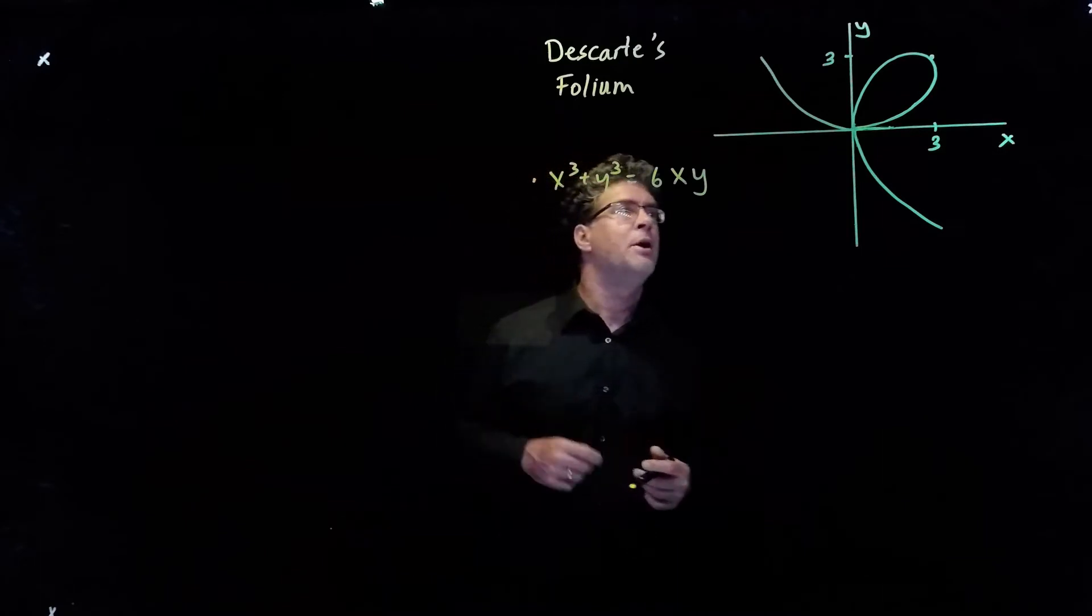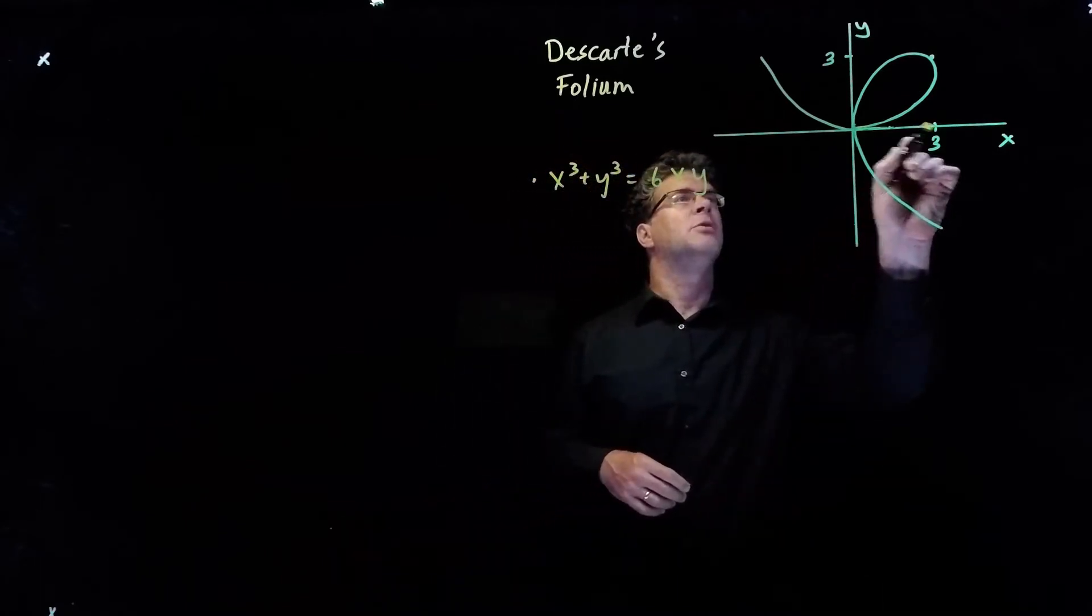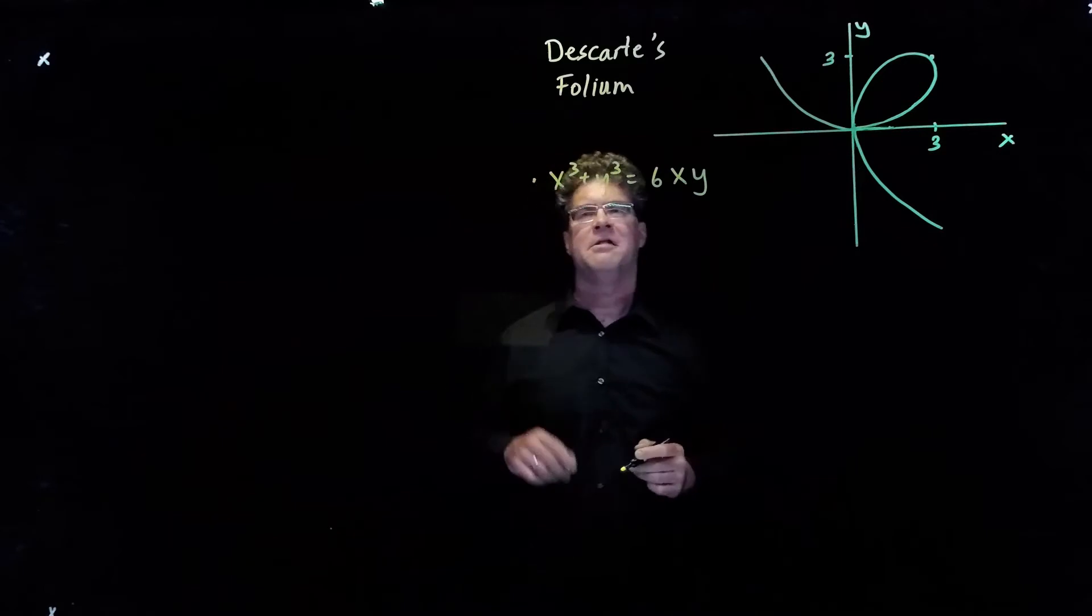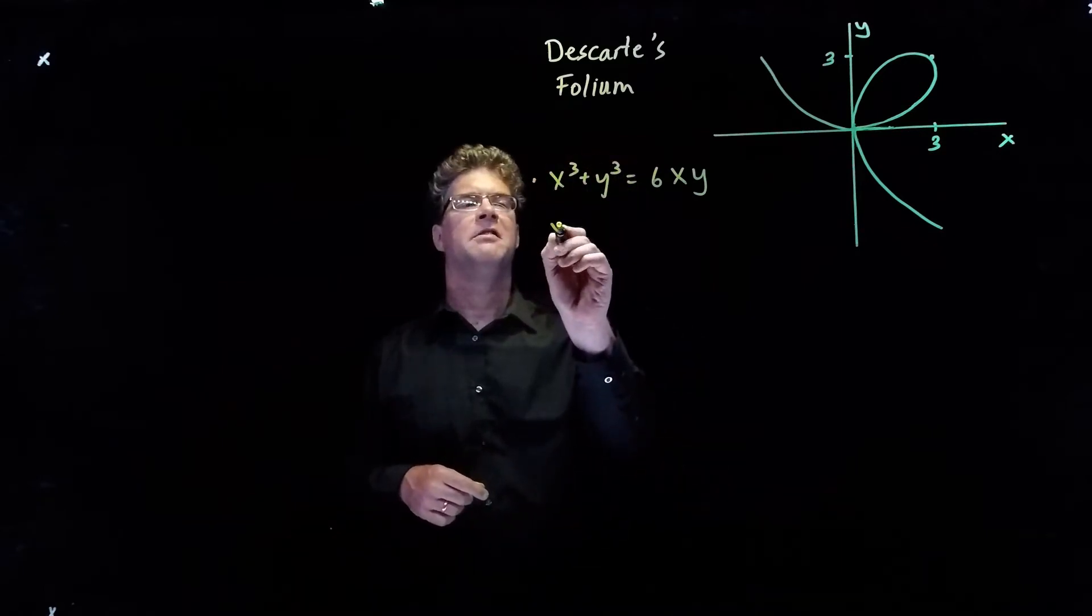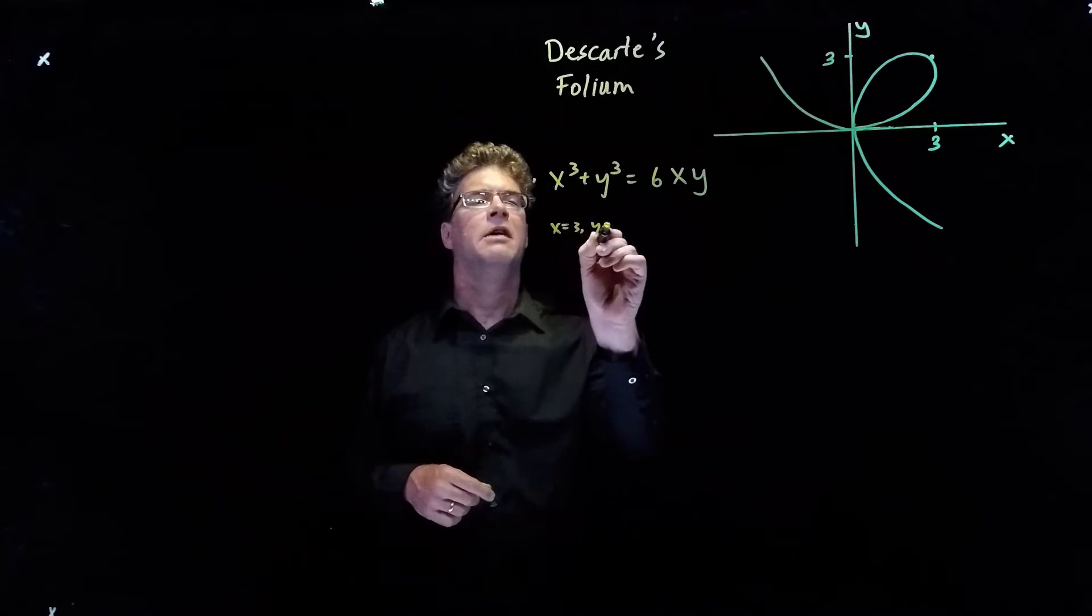So let's take a point on that curve, and we'll take the point x is equal to 3, y is equal to 3. Let's just check that it's on the curve. If x is equal to 3, and y is equal to 3,